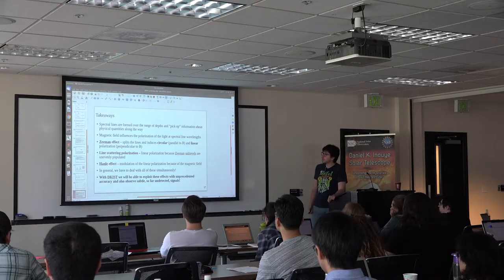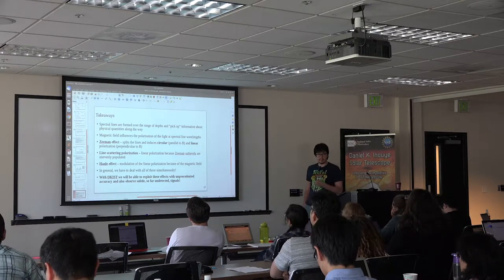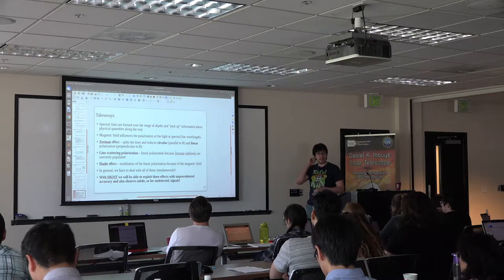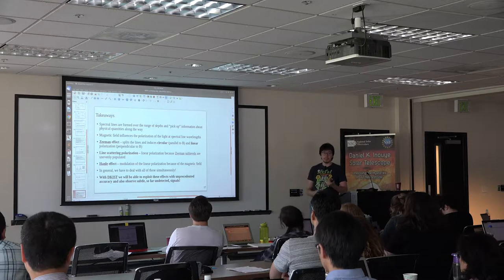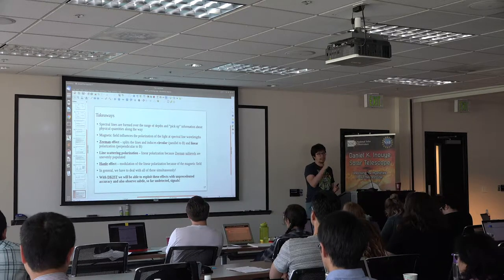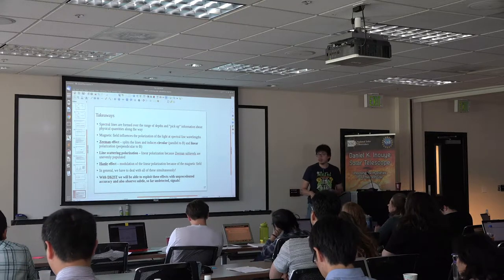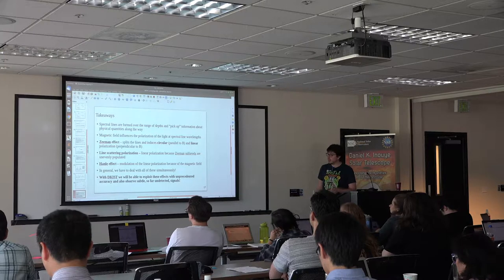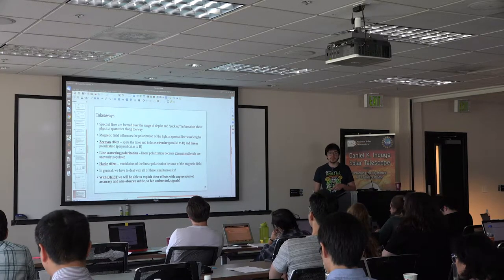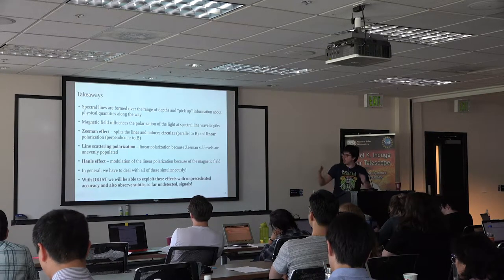The takeaways from this afternoon session: spectral lines are amazing because opacity changes very quickly over a small wavelength range, so you sample a range of heights. Plus they are sensitive to velocities — the continuum can't have a blue/redshift we could detect easily, but with lines we can measure less than a kilometer per second. And lines are also sensitive to the magnetic field and to scattering.